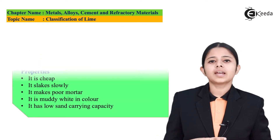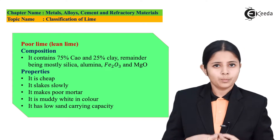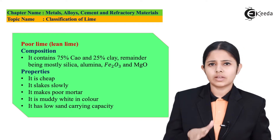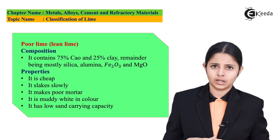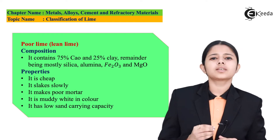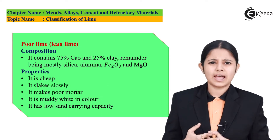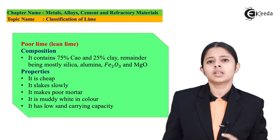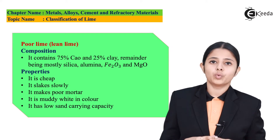The second type of lime is poor lime. Poor lime contains about 60–75% of calcium oxides, that is CaO. The remaining is clay. It also contains small amounts of silica, aluminium, ferrous oxide, and magnesium oxides.